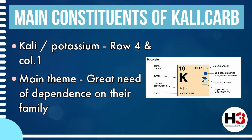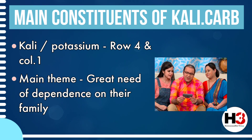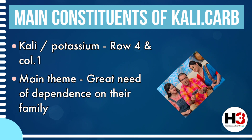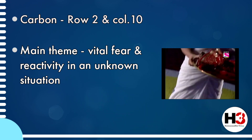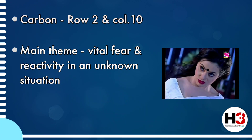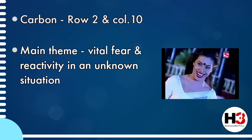Kali Carb is a remedy which belongs to the mineral kingdom. The major two elements of the salt Kali Carb are potassium and carbon. Potassium or Kali is an element belonging to row 4 and column 1, which has a main theme of great dependence on a certain group or his own family. The other mineral, carbon, belongs to row 2 and column 10 of the periodic table, and the main theme of carbon is vital fear or reactivity when in a new or unknown situation.